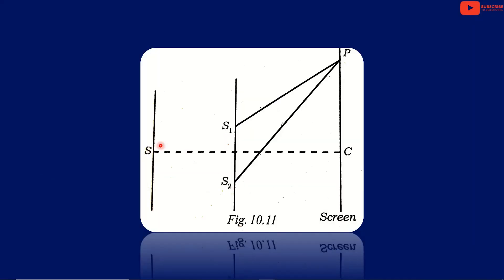We are going to discuss coherent addition of waves. We will consider a monochromatic source and discuss the wavelength. We consider two narrow pin holes S1 and S2, which are equidistant and act as two coherent sources having the same amplitude, same frequency, and constant phase difference.